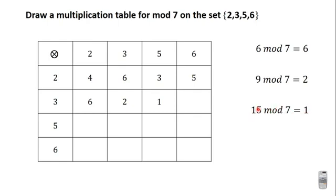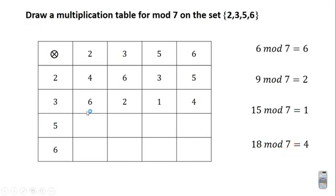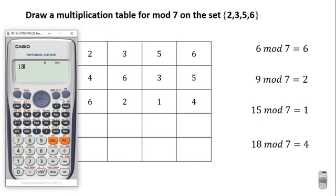3 × 5 is 15, and 15 mod 7 is 1. Since 15 is bigger than 7, you subtract 7 from 15 to get 8, but 8 is still bigger than 7, so you subtract 7 from 8 again to get 1. So 15 mod 7 is 1. Then 3 × 6 is 18. You subtract 7 from 18 to get 11, then subtract 7 from 11 to get 4, so 18 mod 7 is 4.